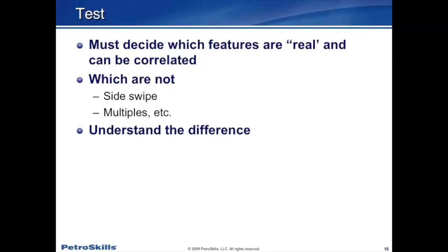The next thing we have to do is determine which features we see on the seismic data are real and can be correlated, and which are not. Particularly with 2D seismic data, we tend to see things like sideswipe — reflectors coming from out of the plane of the section crossing our data set. We also see multiples, which are repeats of some event — especially offshore, the water bottom reflector is very strong and tends to bounce back and forth between the seafloor and the water-air interface, producing that same event repeated over and over in the data. It makes a really nice reflector but bears nothing in reality, so we need to understand the difference.